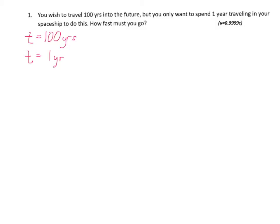Let me demonstrate what I mean about identifying the given information and plugging it into the equation. Here, it talks about somebody wanting to travel 100 years into the future, but only using one year of their time traveling to do so. One of these times is T and the other is T-naught. The T-naught values are always those in the moving frame of reference. In this case, the traveler wants there to be 100 Earth years — Earth is the stationary frame. Traveling in a spaceship is the motion, so the one-year time is T-naught. The question is: what is the velocity, how fast would they have to travel?